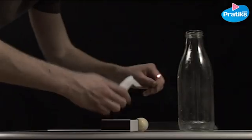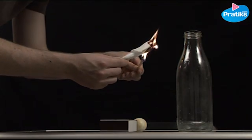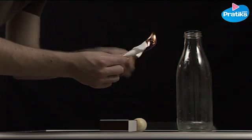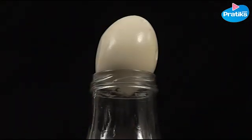Then light the tissue paper with a match and drop it in the bottle. Immediately, place the egg on the bottleneck.